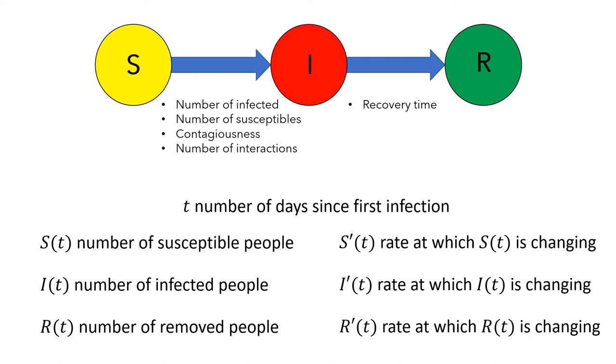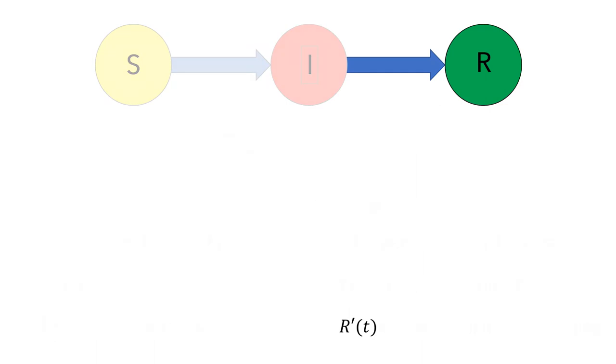Now we're going to put all of this together to create a mathematical model for the entire system. We'll start by making a model for the rate of removal.